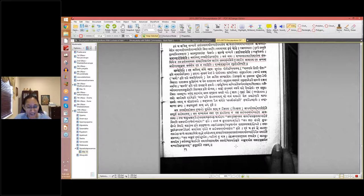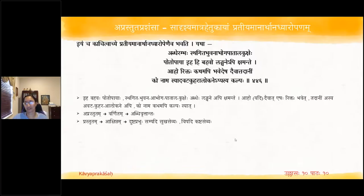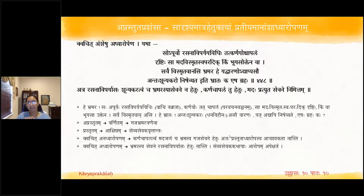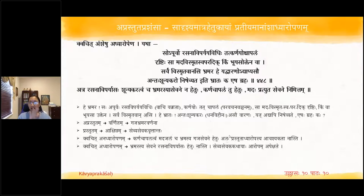After reading the Chakotaka shlokam this becomes clearer. Kvachithu amsheshu adhyaropena — the last variety of Aparastha Prashamsa: in some places we need the adhyaropah, the superimposition; in some places we don't need the superimposition.